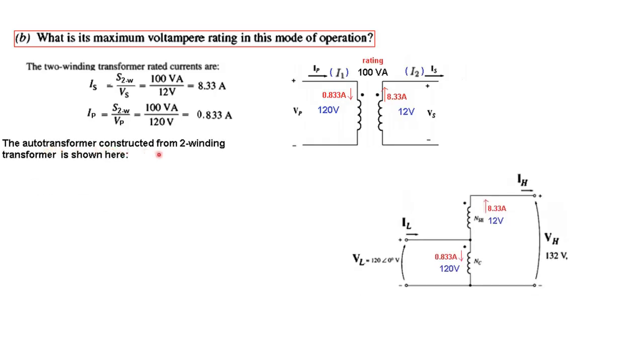Now the auto transformer constructed from two winding transformer is shown here. Now this is the auto transformer. We have taken this up and this is the auto transformer now and all the currents are shown.